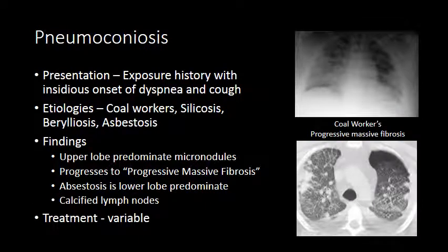Pneumoconiosis encompasses a large range of interstitial lung diseases that predominantly manifest as nodular interstitial lung disease, with vast etiologies. In this region, coal workers' pneumoconiosis, sometimes referred to as black lung, is common, but other environmental antigens from occupational exposure can result in various pneumoconioses. Silica, beryllium, and asbestos are other classic etiologies. In general, pneumoconioses are upper lobe predominant micronodular processes that can progress to massive fibrosis, similar to sarcoid.